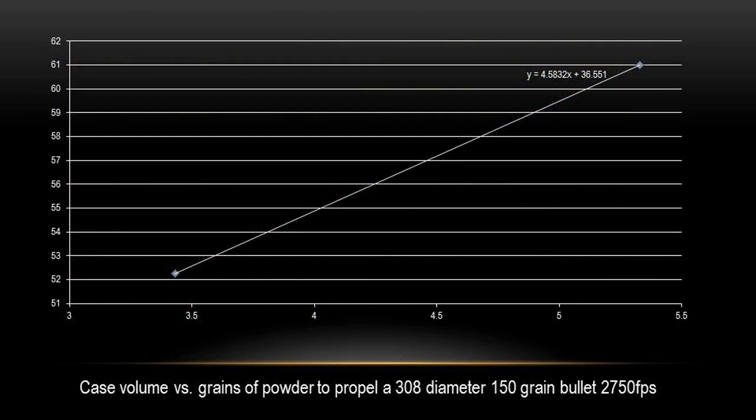Plotting the equation we get the following graph. This is for case volume versus grains of powder for a 150 grain bullet .308 thousandths in diameter accelerated to 2750 feet per second.